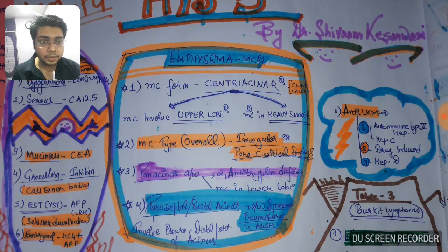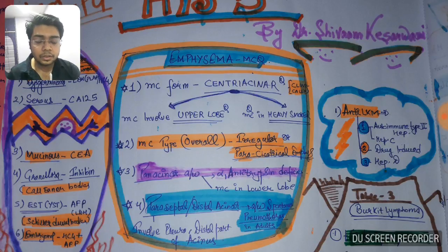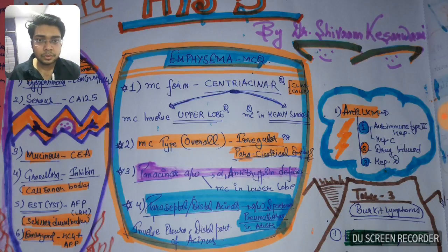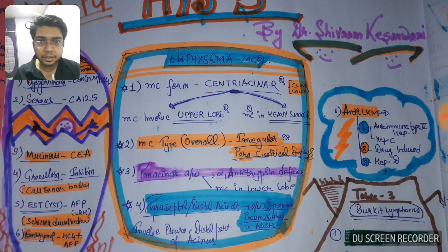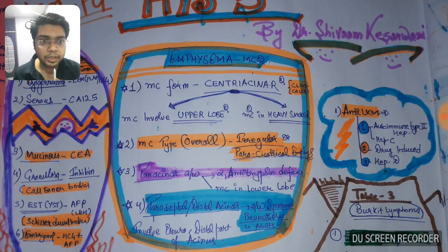If you are being asked by NEET PG examiner that the patient is presenting with this and you found that the patient is having alpha-1 antitrypsin deficiency, the examiner must be asking you about if it is with emphysema. So it will be panacinar.